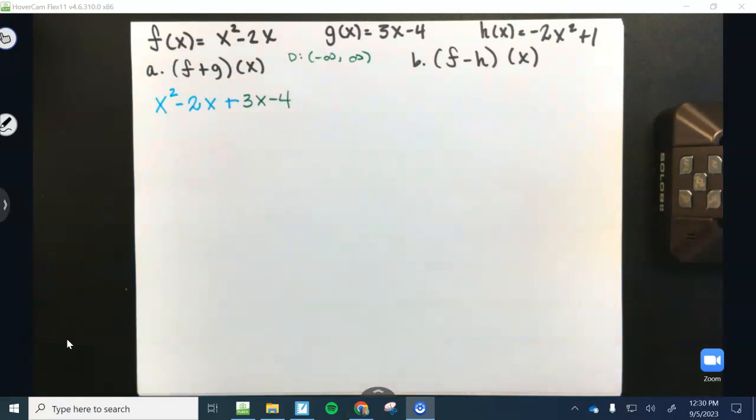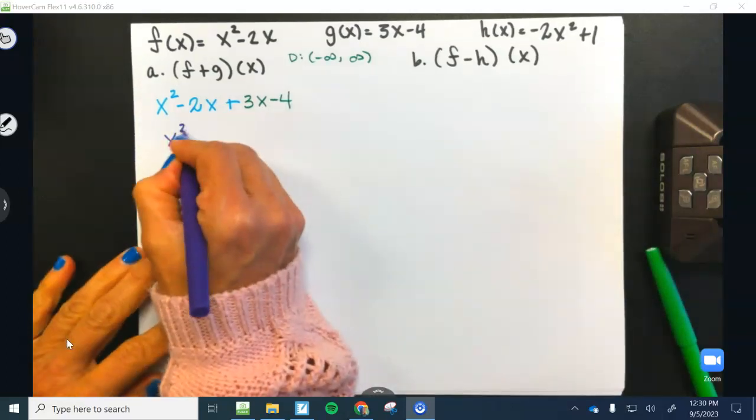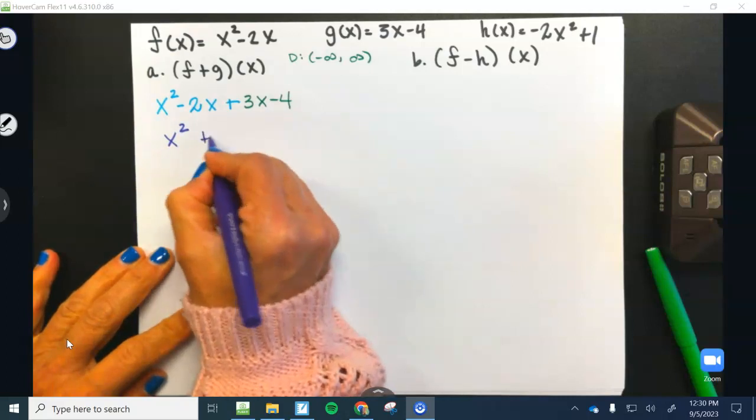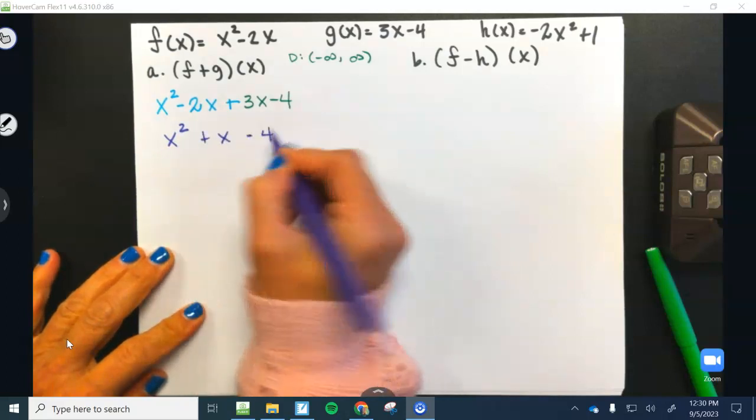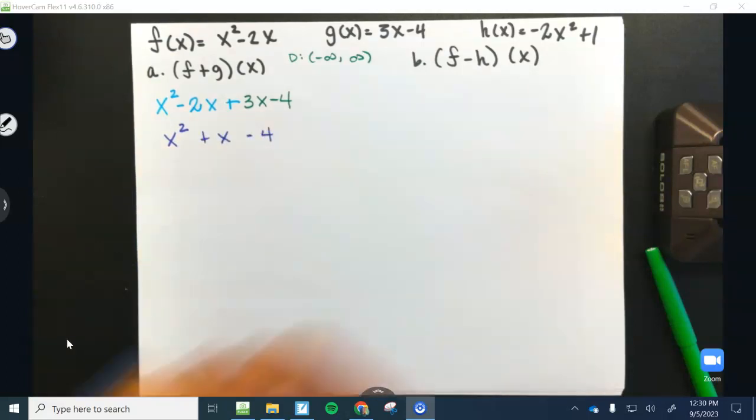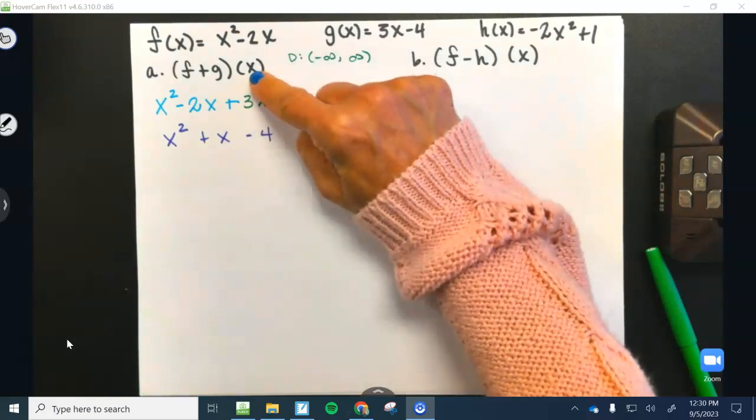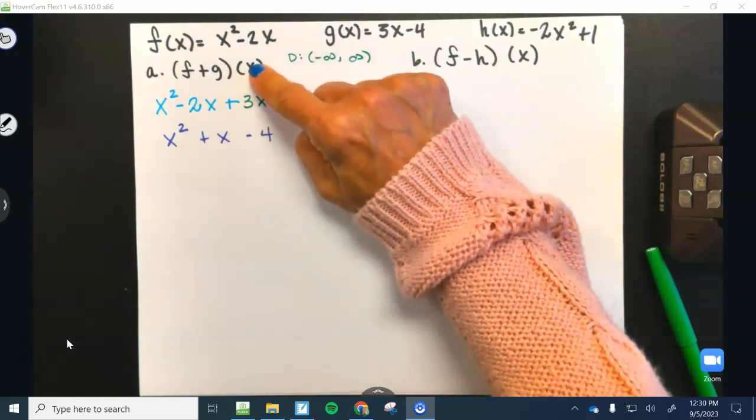And guys, just combine my terms. Y'all know adding, you just put them together. There's no x squared term that I can combine. So it's just going to be x squared plus x minus 4. And then that's it. We're going to leave it in terms of x.